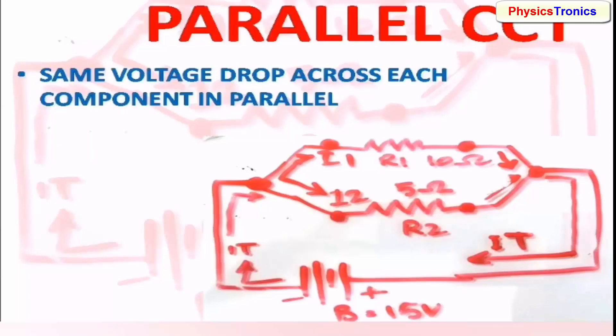Second rule: the same voltage drop will be present across every component in parallel because every component R1, R2, R3 will be directly connected to the battery terminal. If there are many components, but every component is connected to the positive and negative terminal, it is called a parallel circuit.